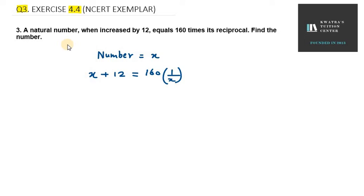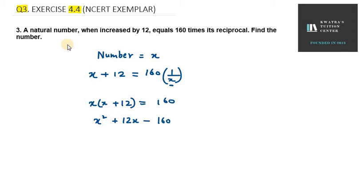Now what you need to do is take the x from the right hand side and bring it to the left hand side and multiply. So it will be x into x plus 12 equals 160. So you get x squared plus 12x minus 160 equals 0.